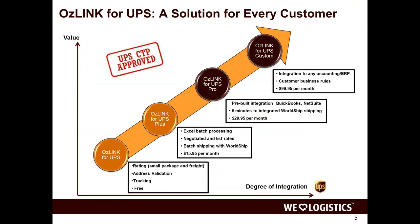There are four different solutions for OzLink for UPS. The two at the bottom are front office rating tools. OzLink for UPS Plus has an elegant batch capability with Excel — you can rate and track shipments in a batch process. The top two are WorldShip integrations. OzLink Pro works out of the box with either QuickBooks or NetSuite, pulling information from the host, writing it to WorldShip, and writing tracking and costs back.